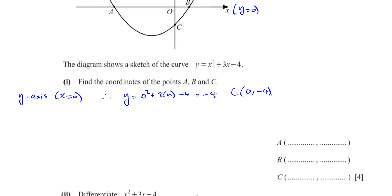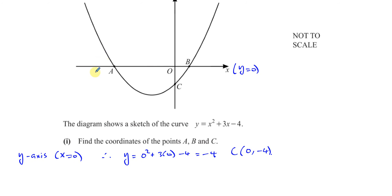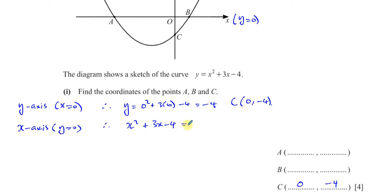So point C is (0, −4). Now we have to find the coordinates of A and B. A and B are the points on the x-axis, so y equals 0. Therefore we can say x squared plus 3x minus 4 equals 0. Solving that equation for x will tell us the places where the curve crosses the x-axis. This will factorize quite easily.